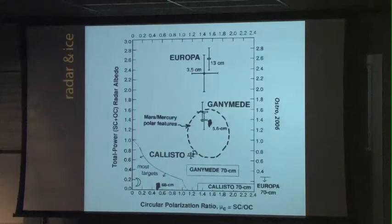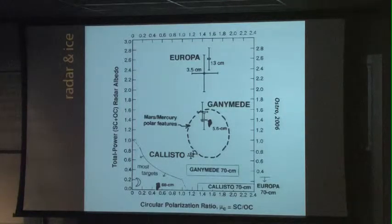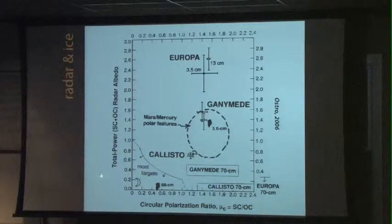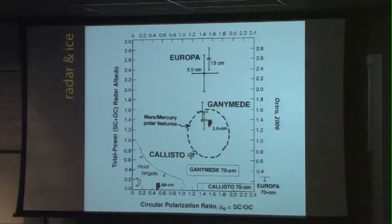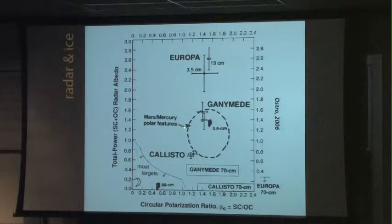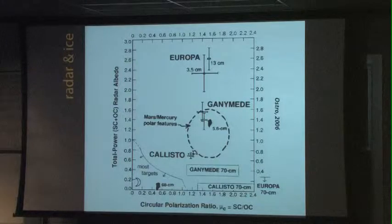So that's point one — we can see in the dark. Point two: ice has really interesting radar properties. This figure, put together in an overview paper by Steve Ostrow in 2006, shows the circular polarization ratio on one axis and the total radar albedo on the other. Most rocky surfaces in the solar system, including the Moon, show low circular polarization ratios and low radar albedo. Then we see the icy satellites of Jupiter — Europa, Ganymede, Callisto — as well as polar features on Mars and Mercury, which are just off the chart.